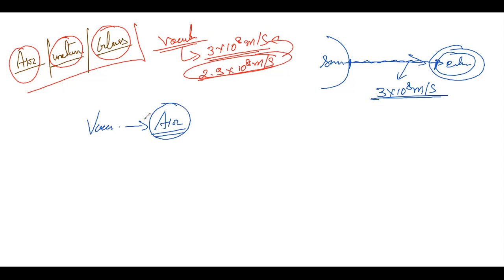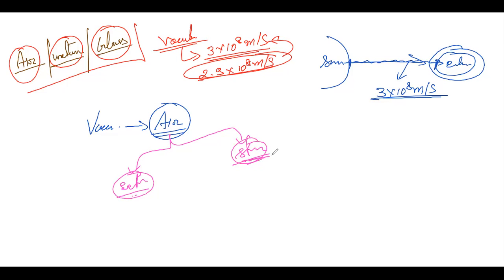We should also note that the different layers of our atmosphere — from the exosphere to the stratosphere — have different thicknesses of air. The exosphere is the extreme end of the atmosphere and the stratosphere is near the upper surface. Because the thickness of air is different in each layer, we observe that the speed of light differs at different layers of the atmosphere.